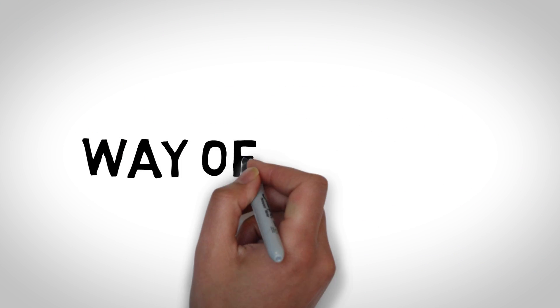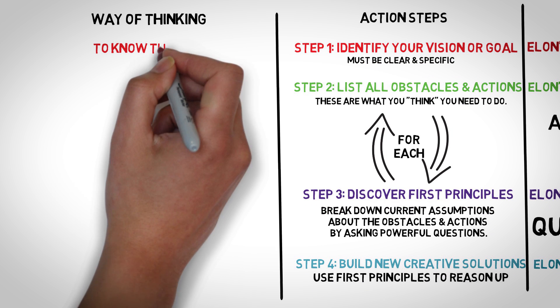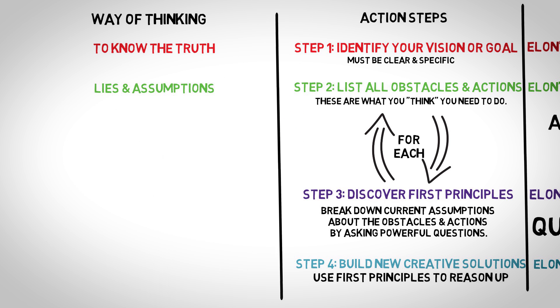Remember that first principles is a way of thinking. To apply it in all actions, you just need to have one goal in mind, to know the truth. The obstacles are lies and assumptions. Your third step is to continuously ask questions and doubt until you get down to the first principles.